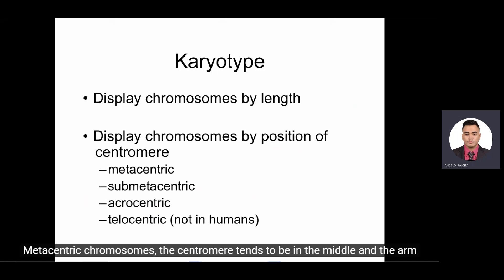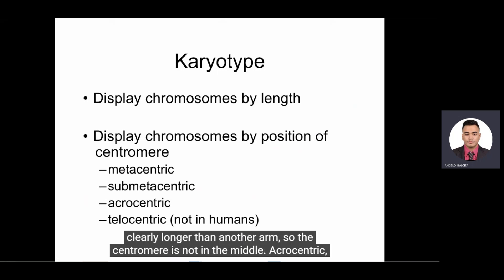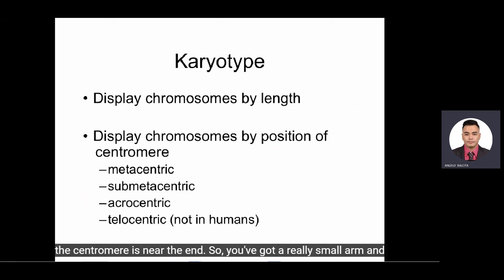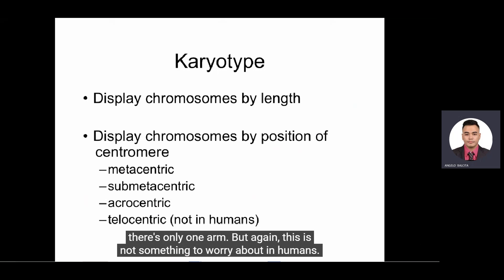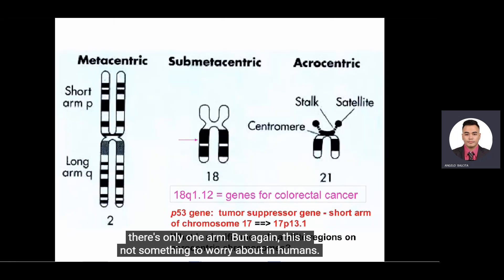We can talk about metacentric chromosomes, sub-metacentric chromosomes, acrocentric chromosomes, and telocentric chromosomes. In metacentric chromosomes, the centromere tends to be in the middle and the arm lengths are about the same. In sub-metacentric chromosomes, one arm is clearly longer than the other. In acrocentrics, the centromere is near the end, giving a very small arm and a long arm. Telocentric chromosomes, which don't exist in humans but do exist in rodents, have the centromere right at the end with only one arm.